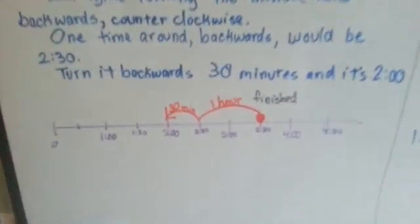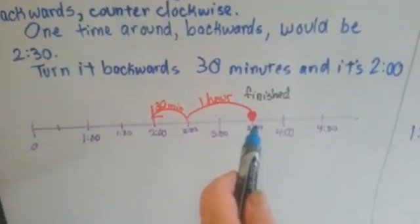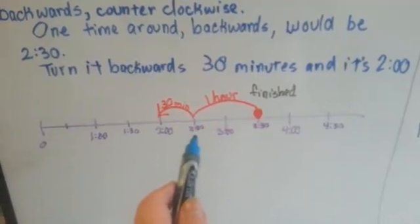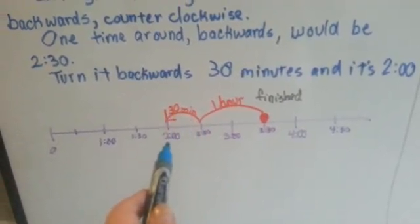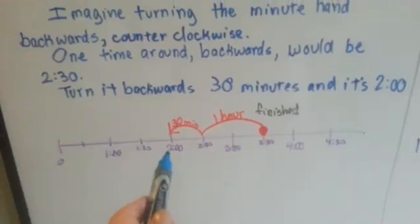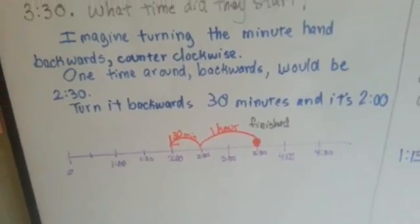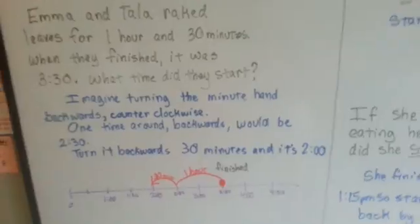This is what it would look like on a number line. They finished at 3:30, we go back an hour to 2:30, and then back another 30 minutes to 2 o'clock. So they started raking at 2 o'clock. We have to remember that because that's going to help us for the next part.